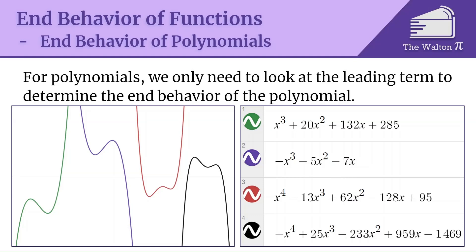For the purple graph, −x³ − 5x² − 7x: as x → ∞ it heads down, so the limit is negative infinity, and as x → −∞ the limit is positive infinity. For even-degree polynomials — x⁴ − 13x³ + 62x² − 128x + 95 heads to infinity on both sides, while the version with a negative leading coefficient heads to negative infinity on both sides. The sign of the leading coefficient tells us exactly what the end behavior will be.